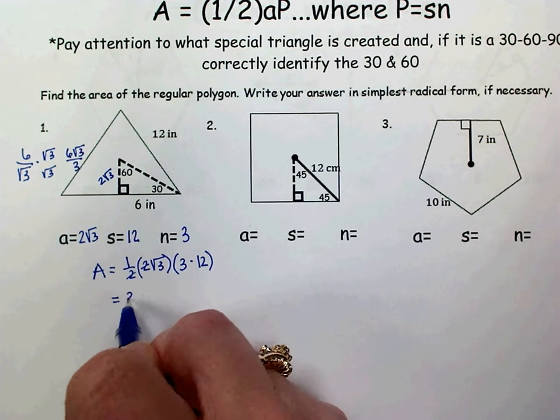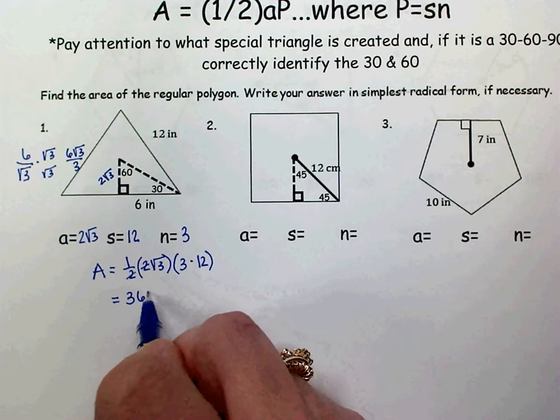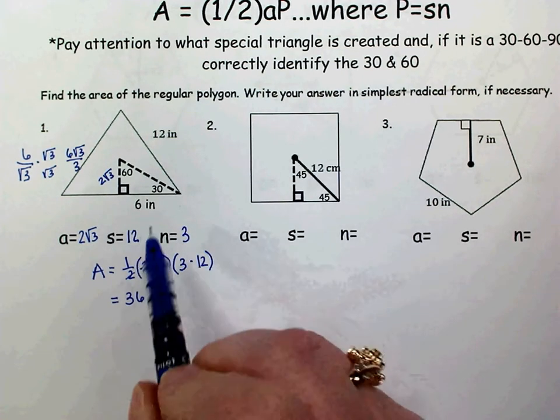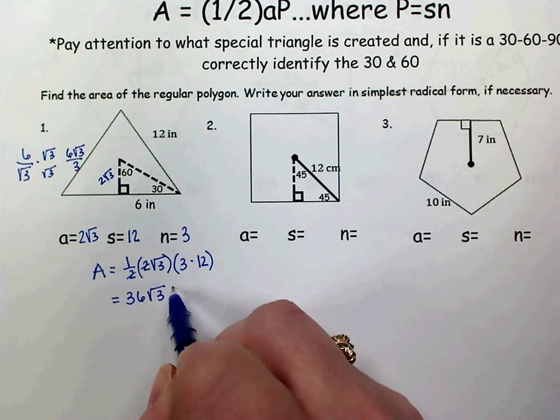And so my area is 36√3. Don't forget the square root of 3. And this is area, so my units would be inches squared.